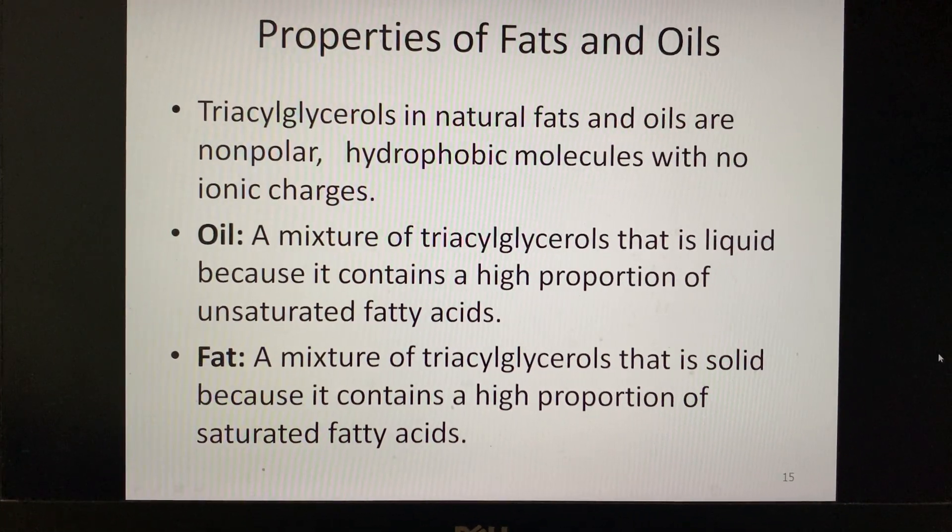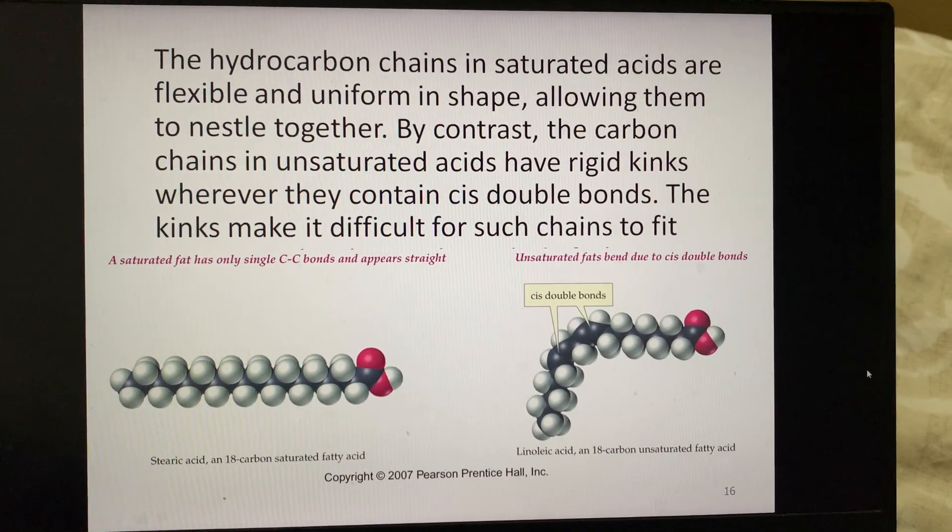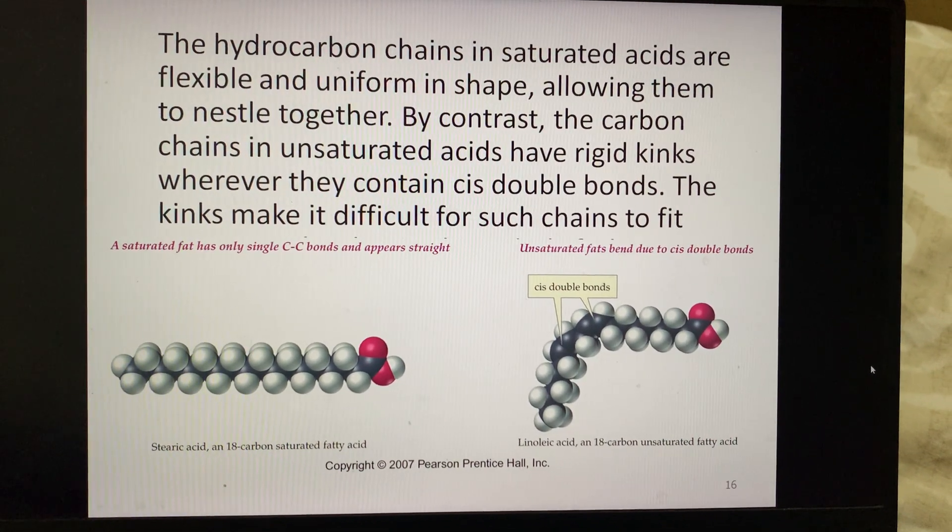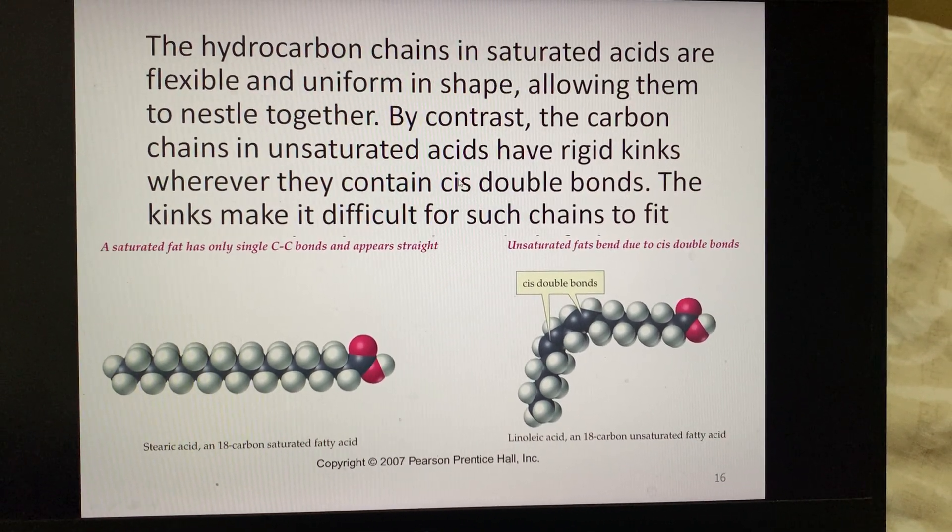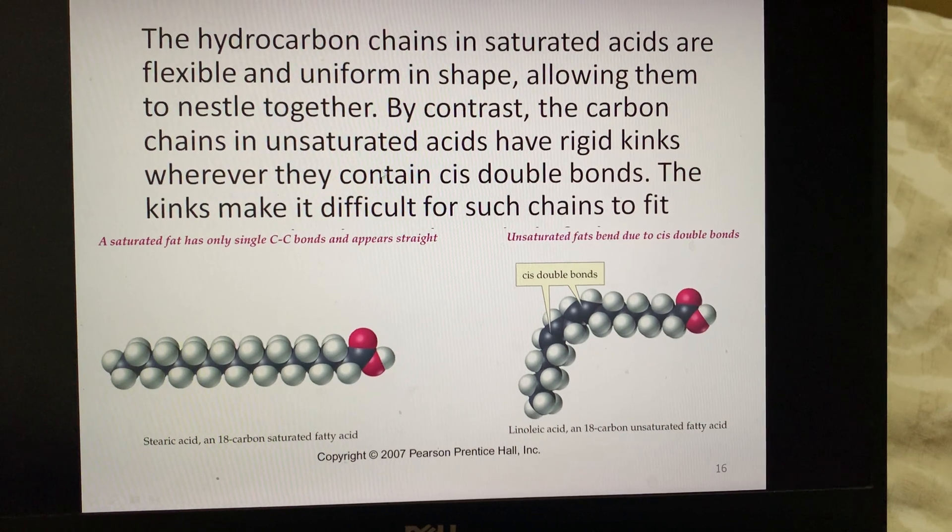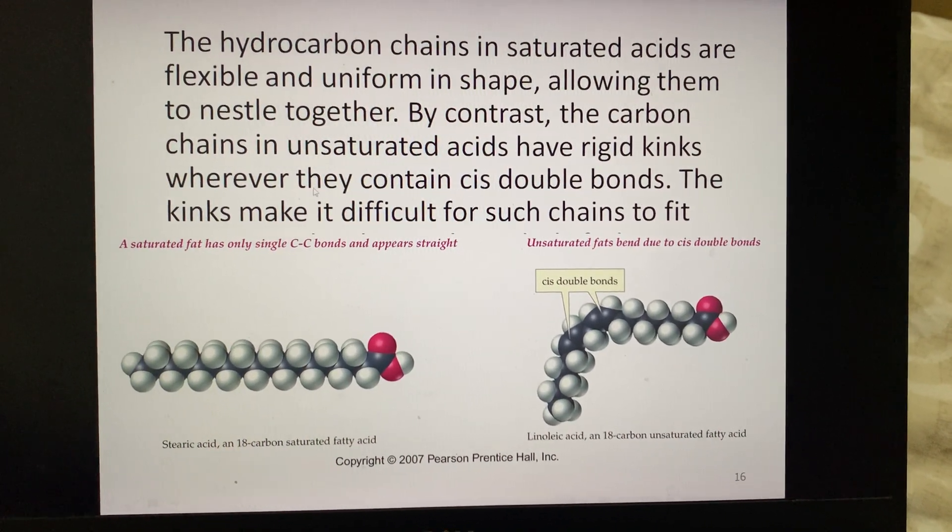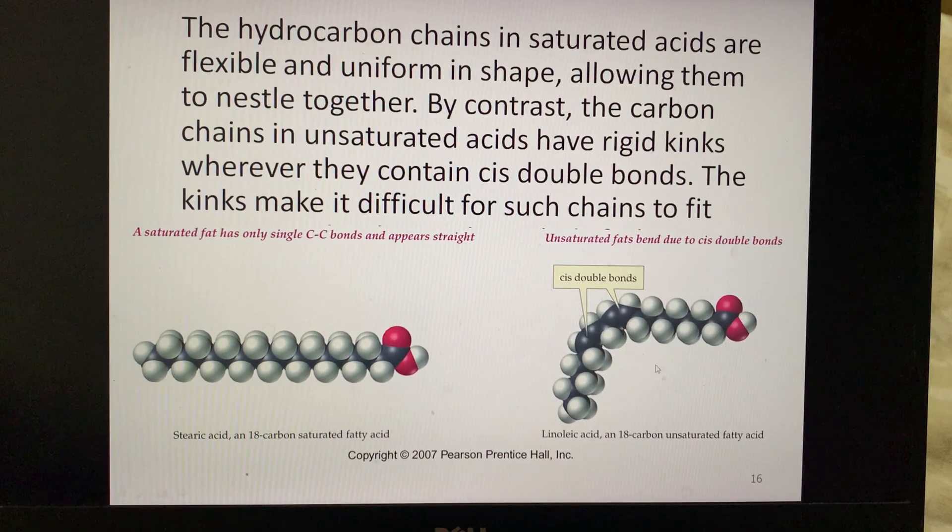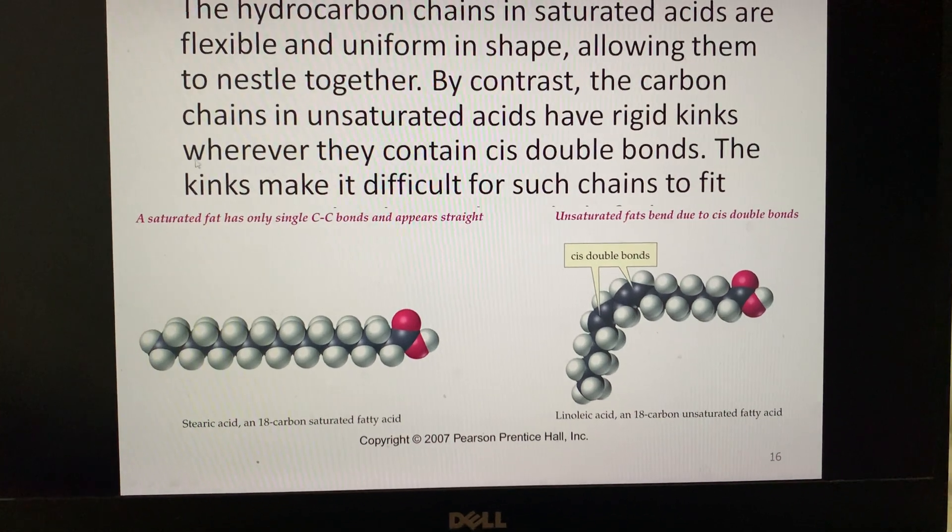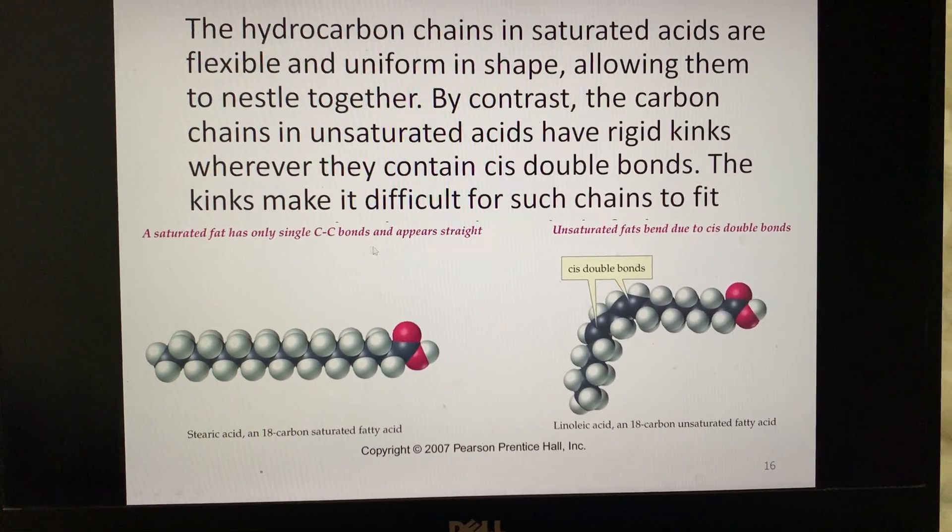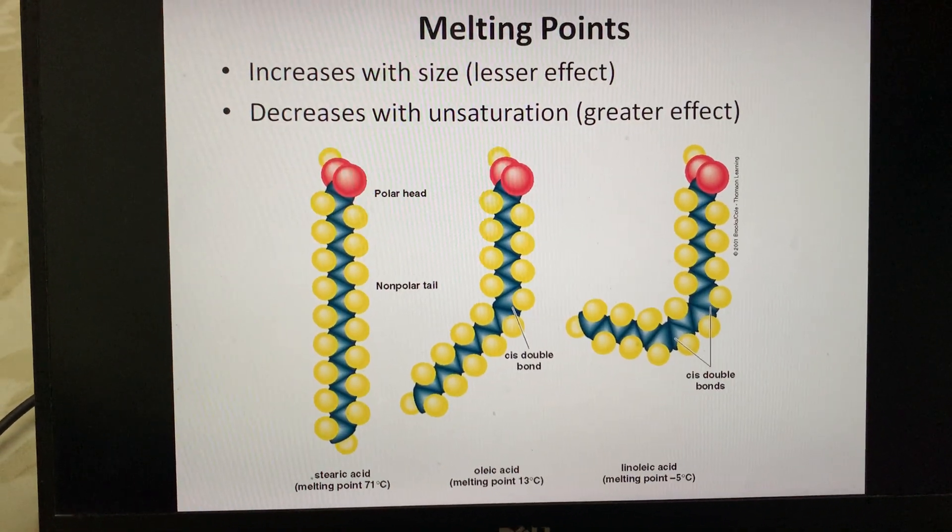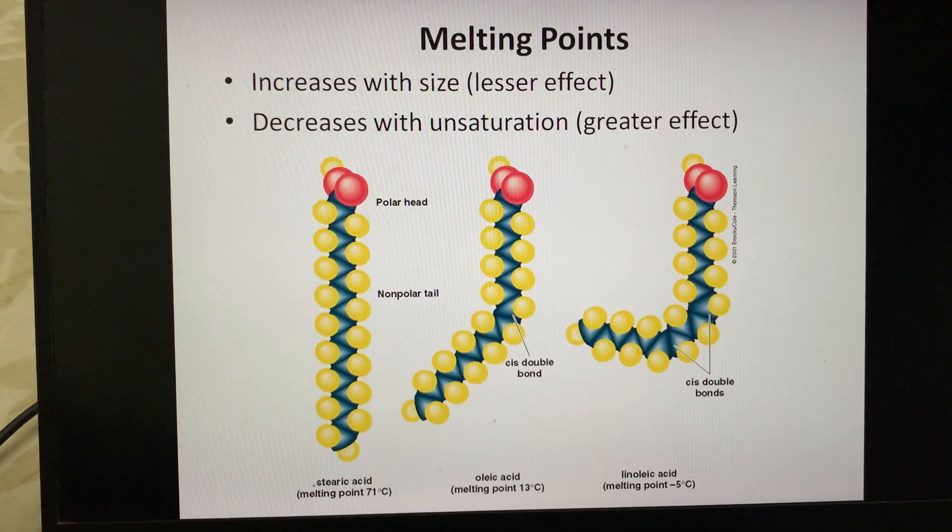Hydrocarbon chains in saturated acids are flexible and uniform in shape, allowing them to nestle together. By contrast, the carbon chains in unsaturated acids have rigid kinks or bends when they contain cis double bonds. The kinks make it difficult for such chains to fit together. This is unsaturated fat with a bend at the cis double bond, whereas saturated fat with only single bonds appears straight. Melting point increases with size but has lesser effect, and decreases with unsaturation which has greater effect.